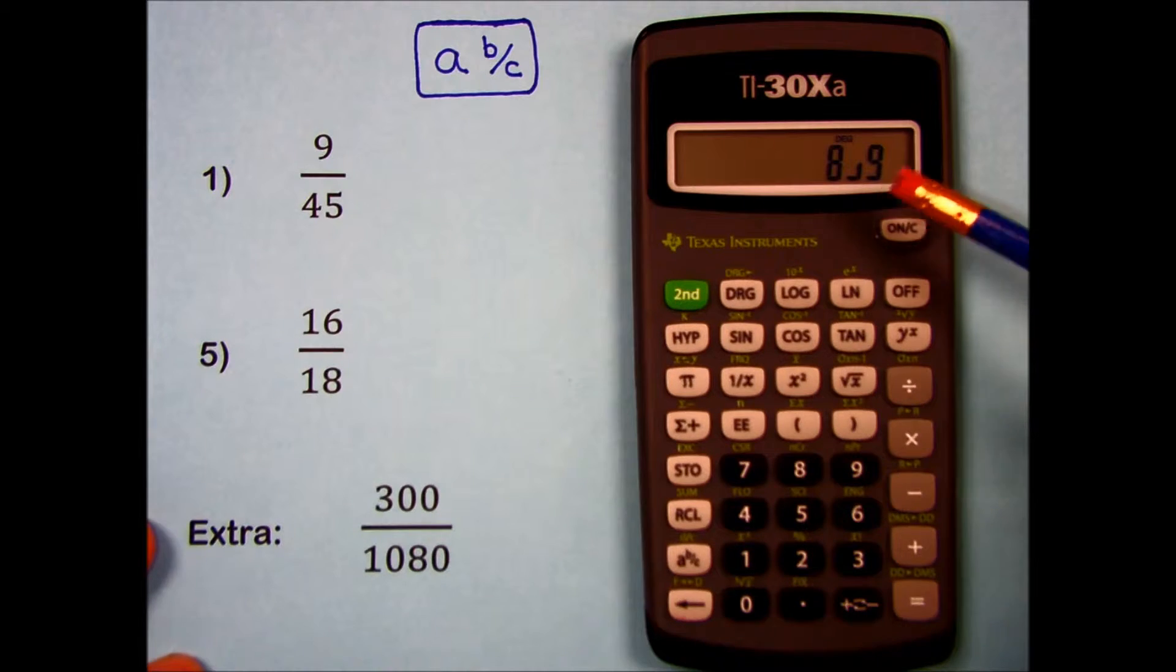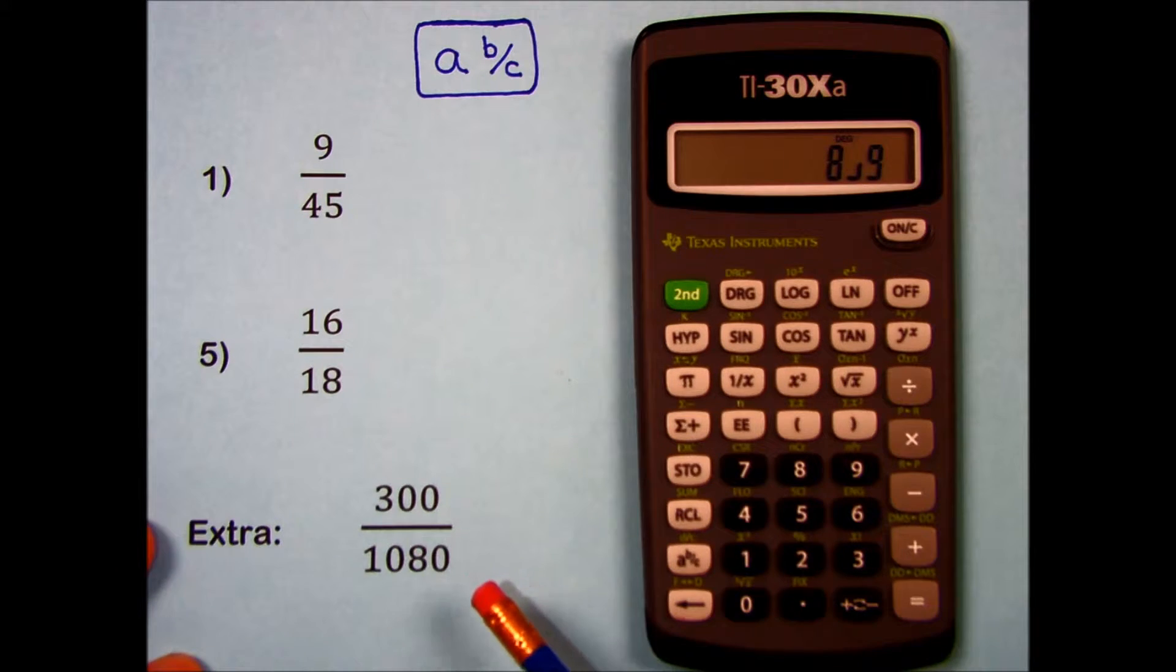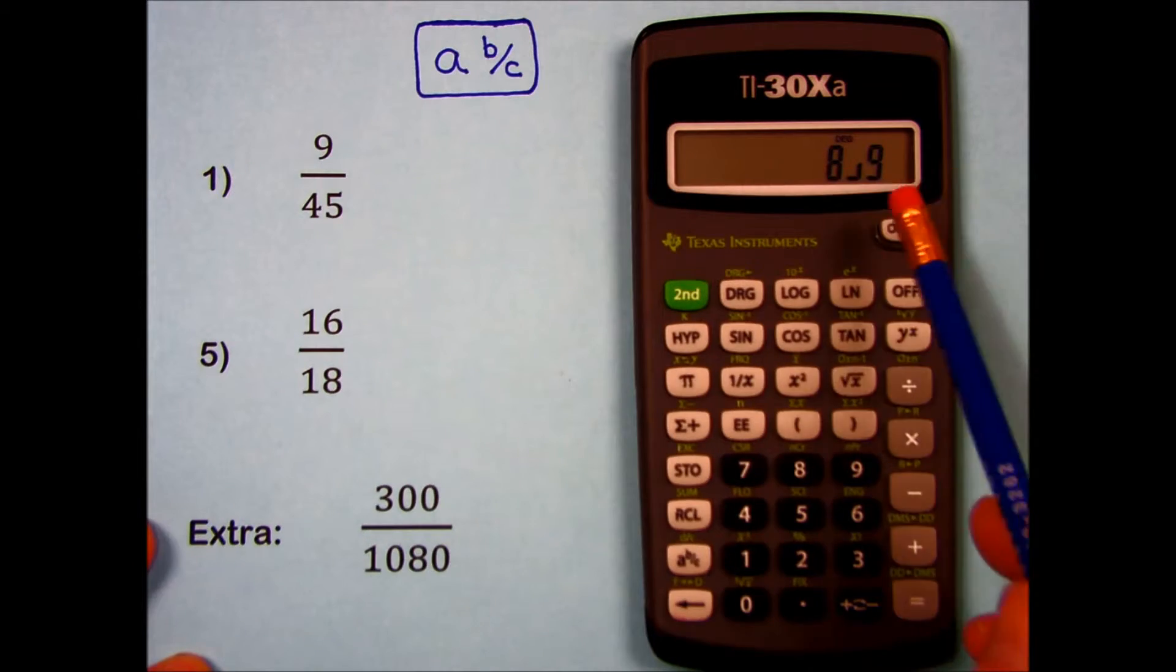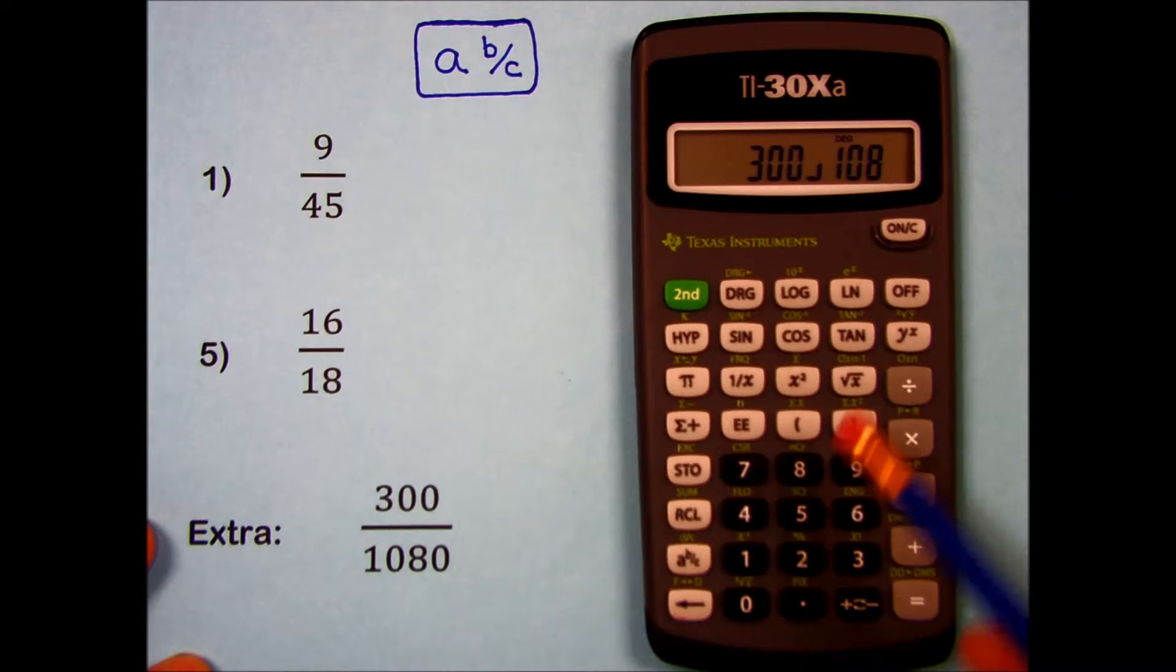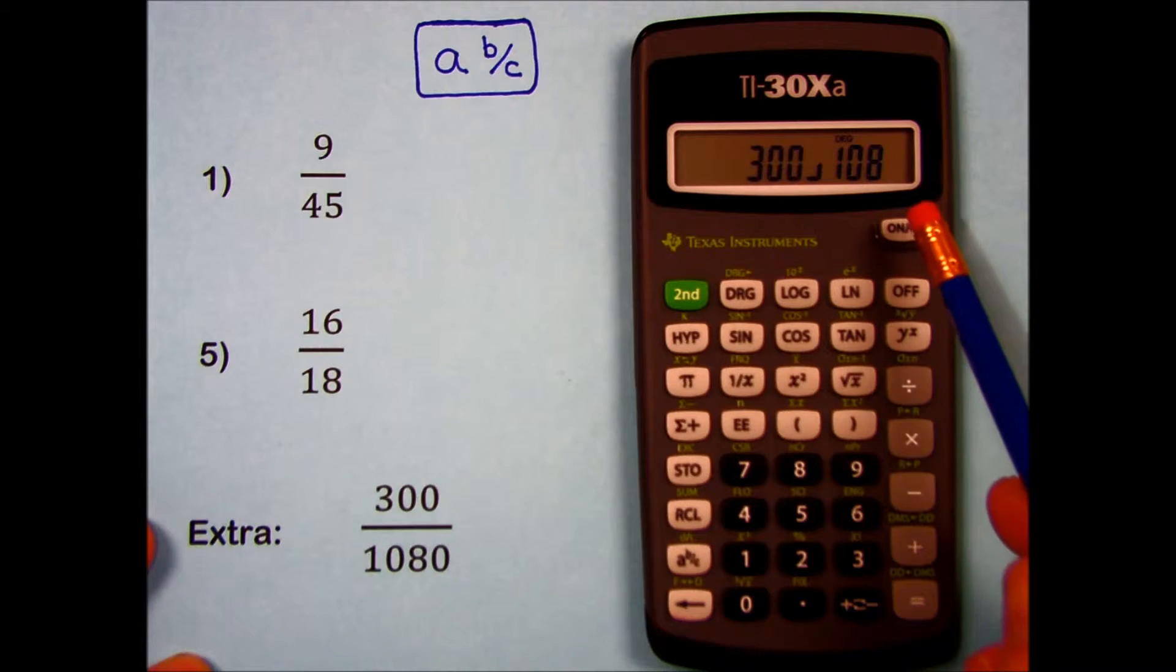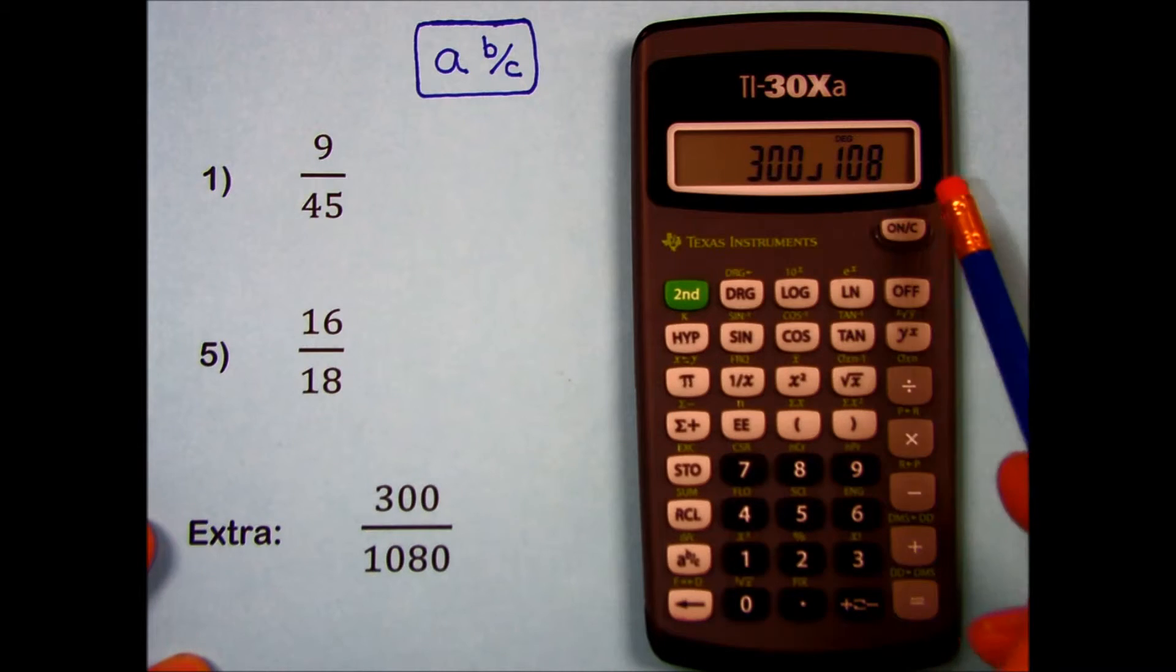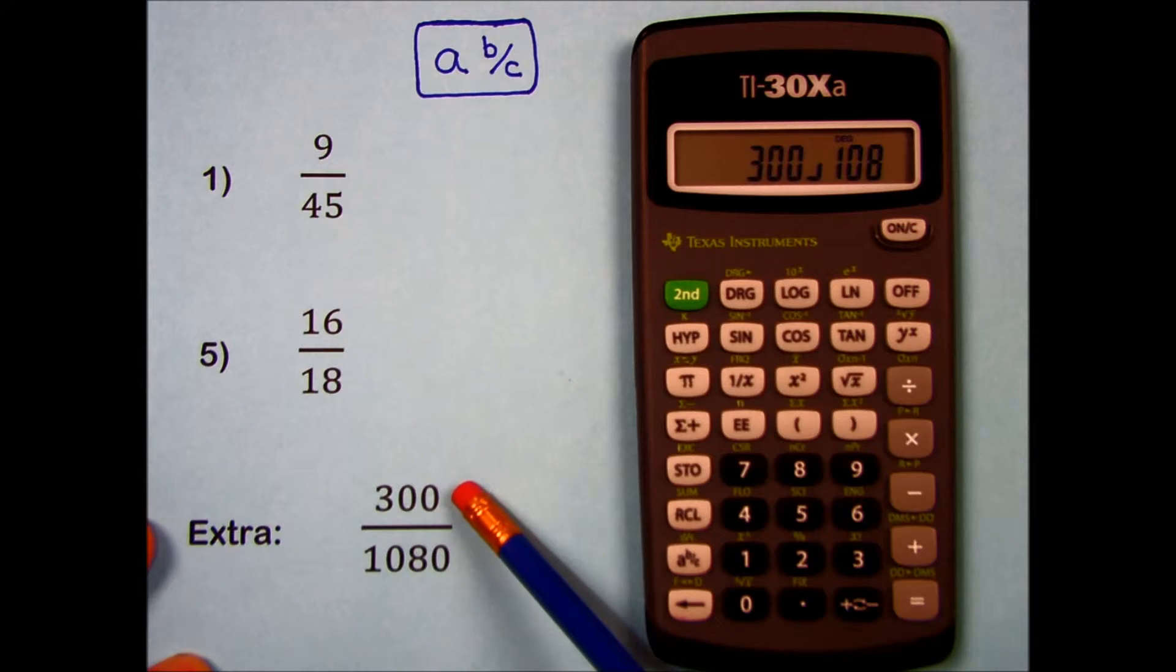I have one extra problem in here that was not in your book. Let's see if the numbers that are this big can be handled on this calculator. 300, fraction key, 1080. You'll notice I can't get that final 0 to display, so any answer I get here will not be correct. You'll need to do this one on your own by hand as shown in the book.